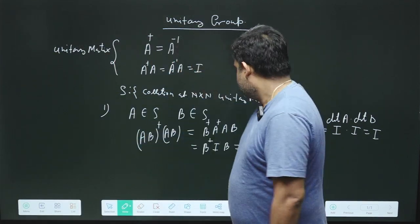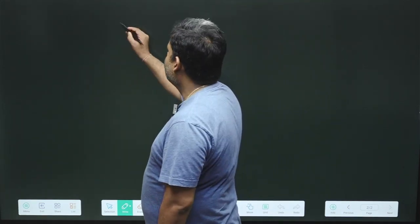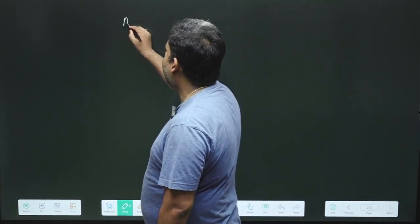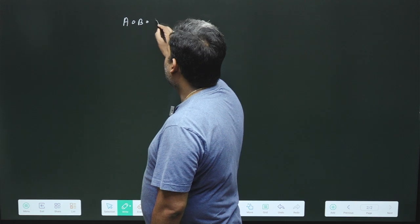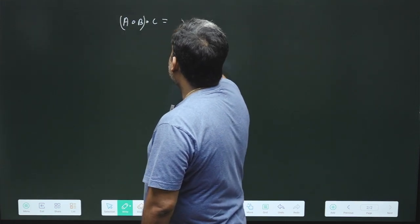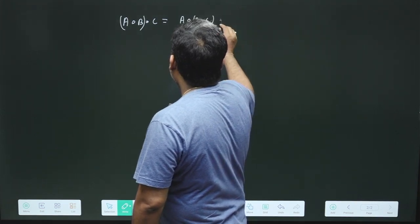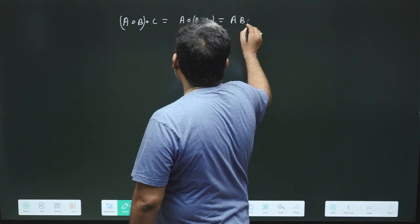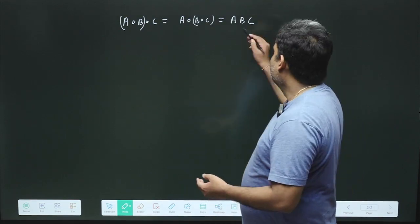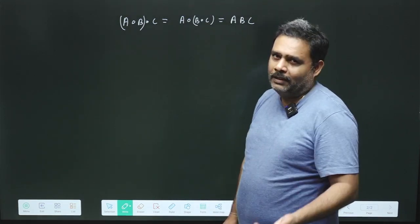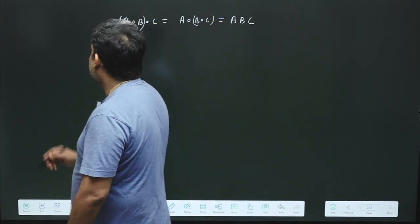Second, we verify the associative relation, which is straightforward. We have A operated on (B operated on C) equals (A operated on B) operated on C, giving ABC. Since AB is unitary and BC is unitary, ABC is also unitary. So yes, we satisfy the associative relation.